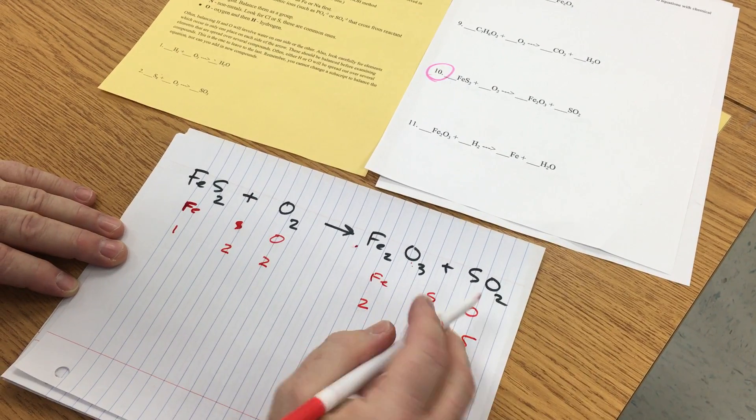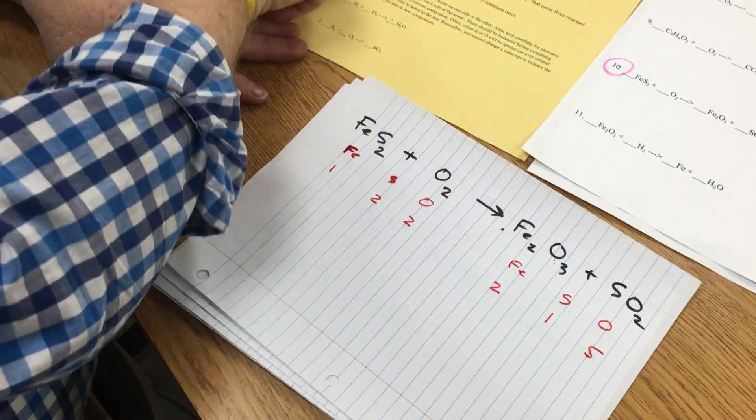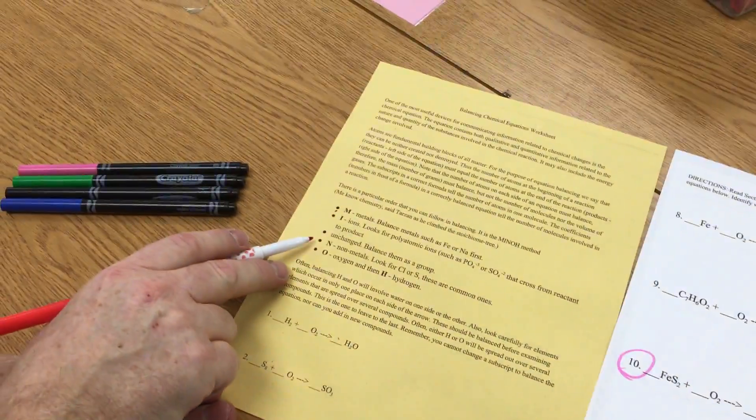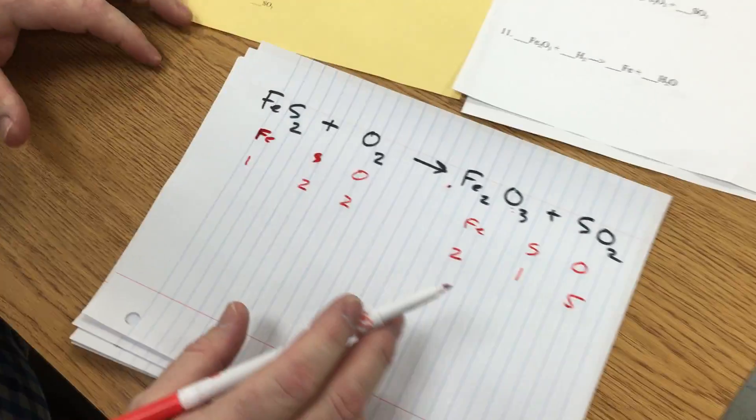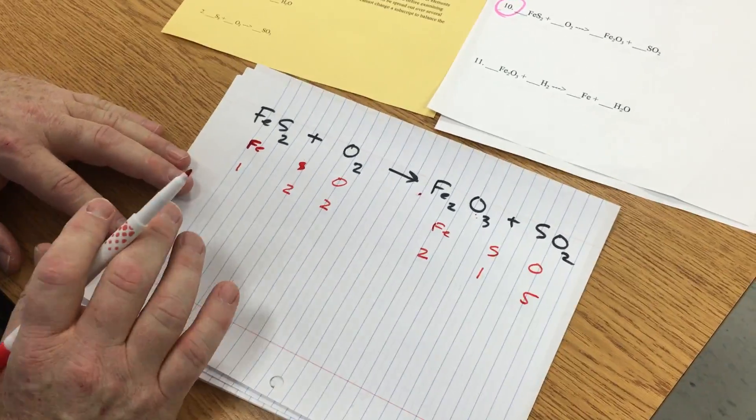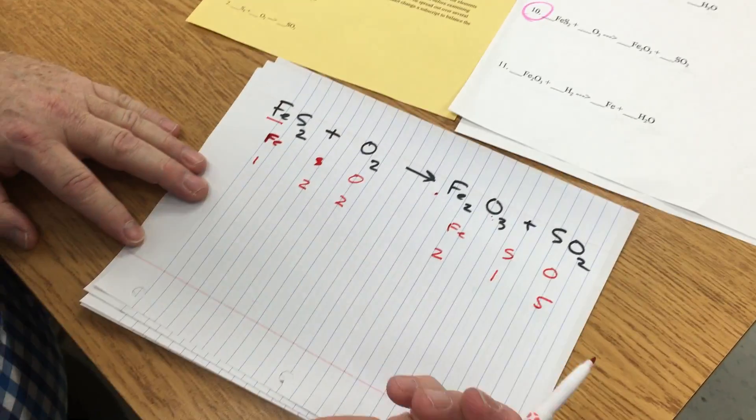So according to our balancing equations worksheet, you start off with metals, then ions, then nonmetals and oxygens and hydrogen. All right, so I know that iron is a metal, so I'm going to start there.